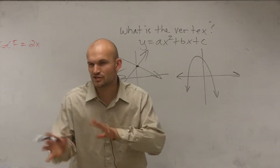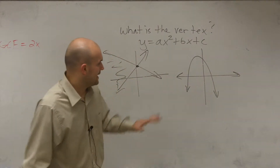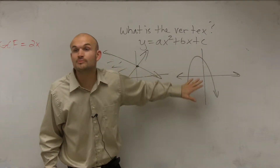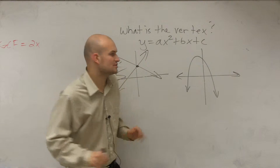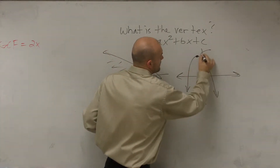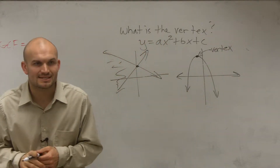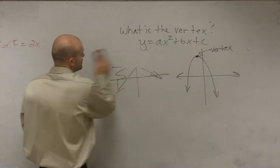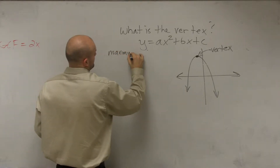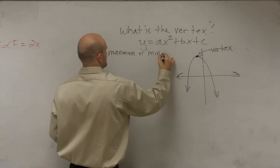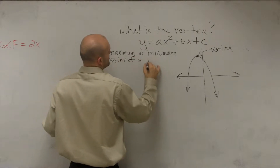So here's your quadratic. This is going to be the form that this equation produces when we look at a graph. But for right now, all I want you guys to understand is that the vertex is the maximum or minimum point of a parabola. So when I ask what is the vertex, the vertex is the maximum or minimum point of a parabola.